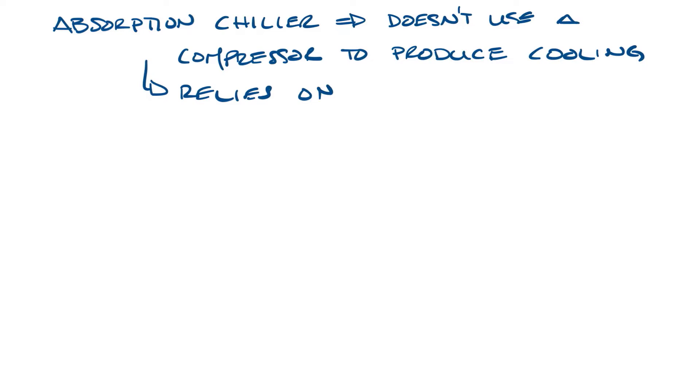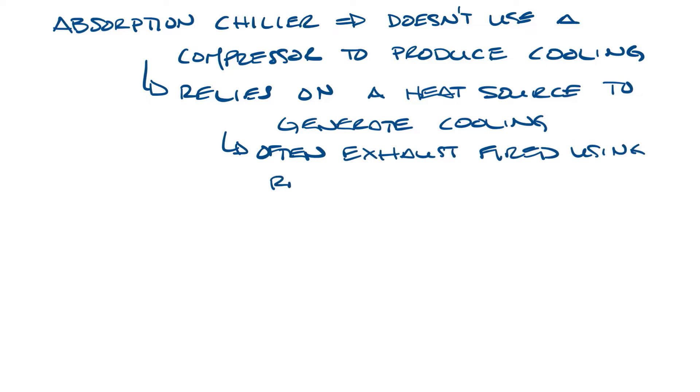An absorption chiller is a type of chiller that doesn't use a compressor to produce cooling like we discussed last week. An absorption chiller relies on a heat source to generate the cooling. They are often exhaust fired using recovered thermal energy as that heat source.